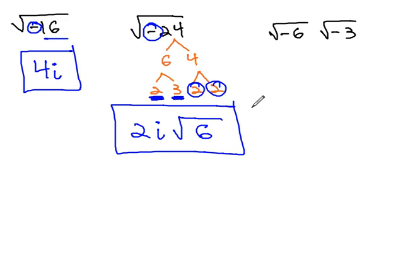How about this example? The square root of negative 6 times the square root of negative 3. We actually cannot multiply these radicals together until we first simplify them, and pull out specifically these negatives.